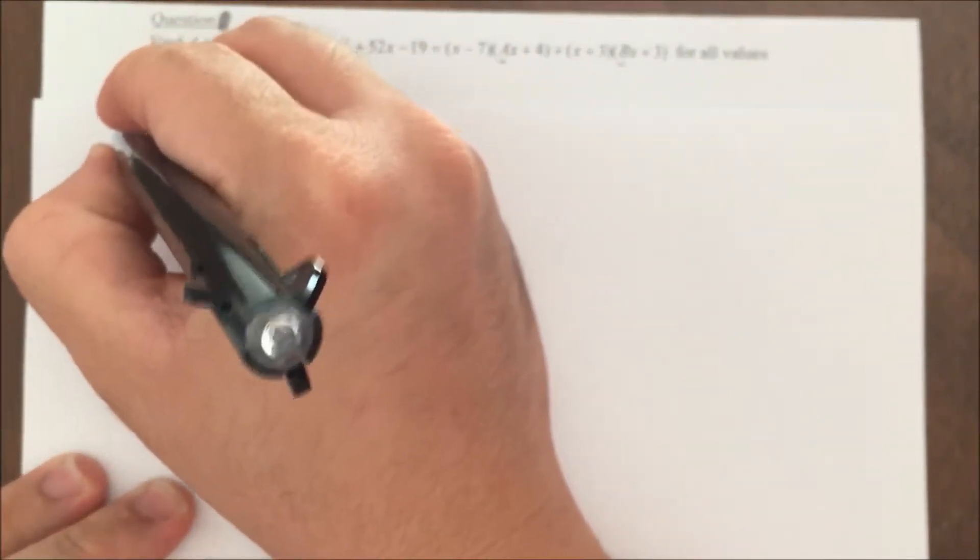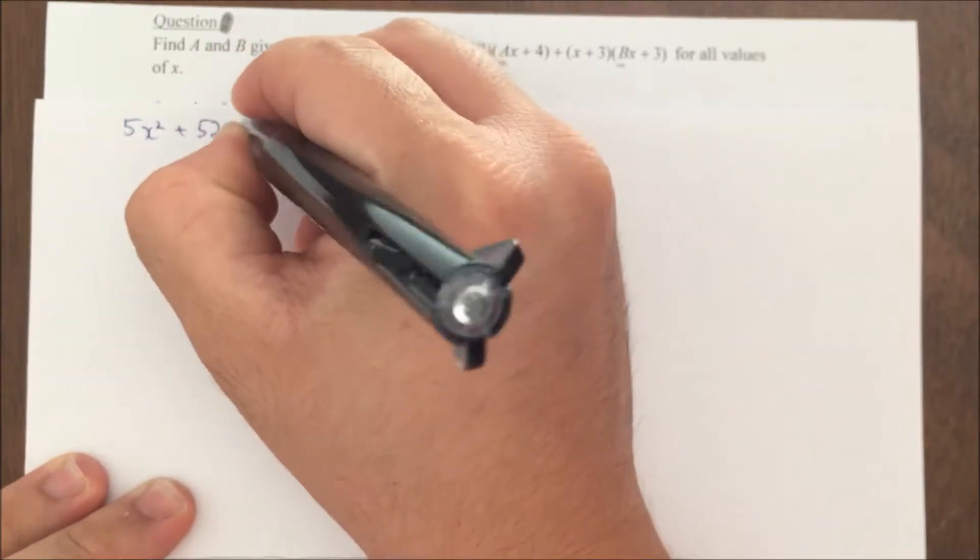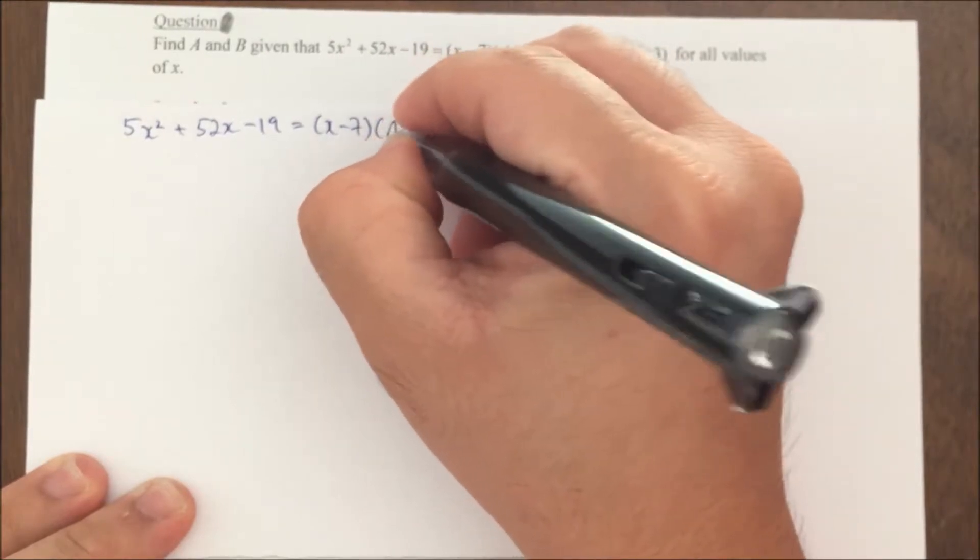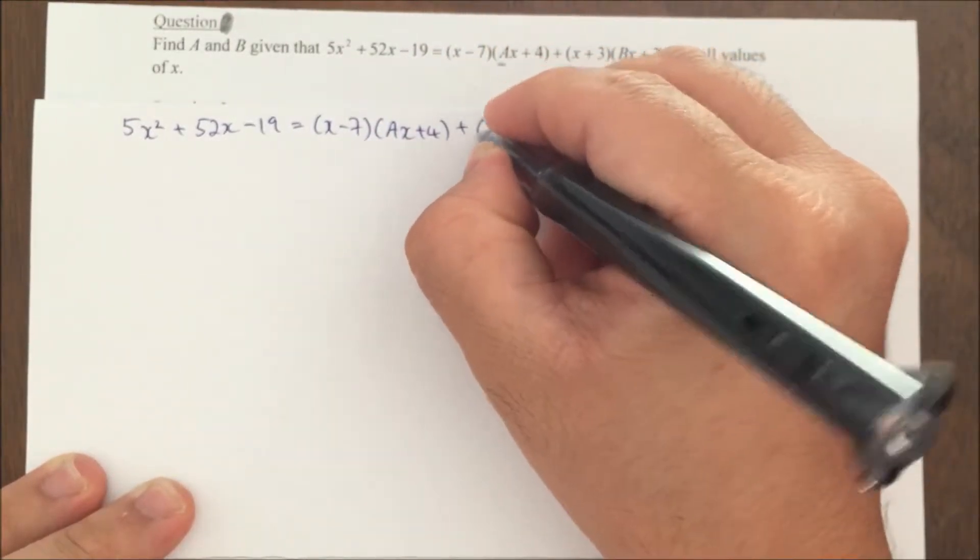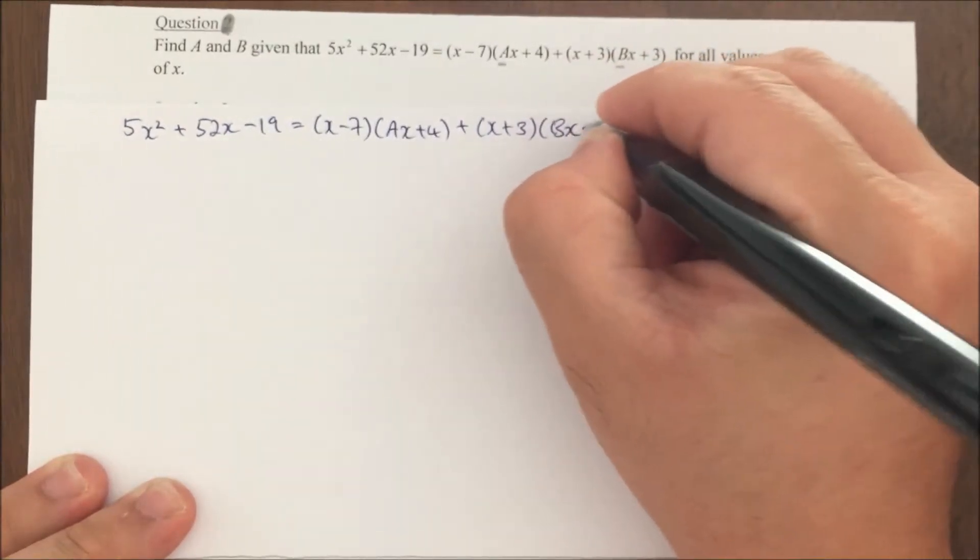Let me write down the question first. I have 5x squared plus 52x minus 19 equals (x minus 7) multiplied by (ax plus 4) plus (x plus 3) multiplied by (bx plus 3).